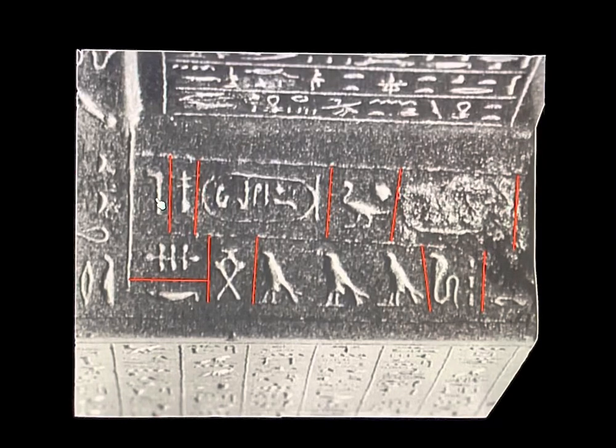And on the right side of the base of the stella as well, you have the same titles of Nektanebo. And here it says The perfect god, again the throne name of the pharaoh, Seneb Jemibre Setepamun.